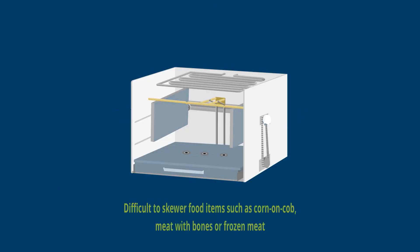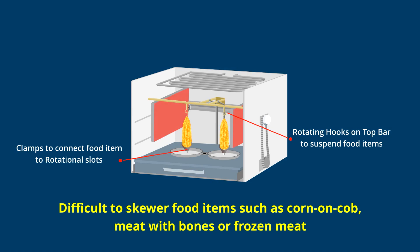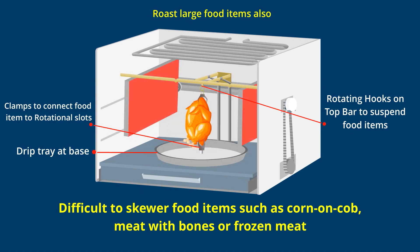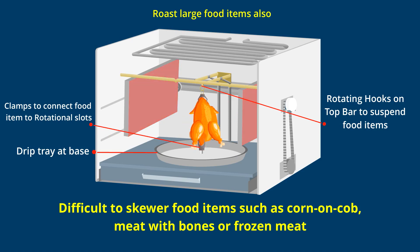Sometimes corn on the cob, meat with bones, or frozen meat can be difficult to skewer. These can be suspended from rotating hooks attached to a top bar and clamped to the rotational slots at the base, with direct heat provided from the movable heating panels at the sides.